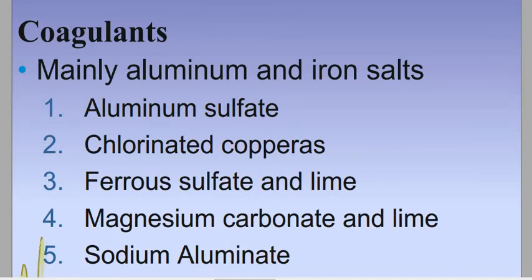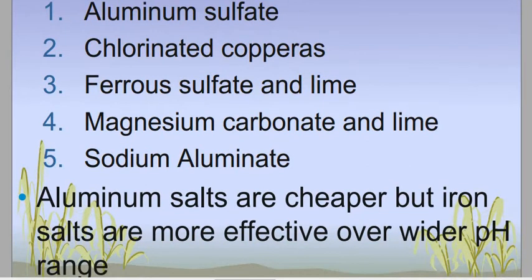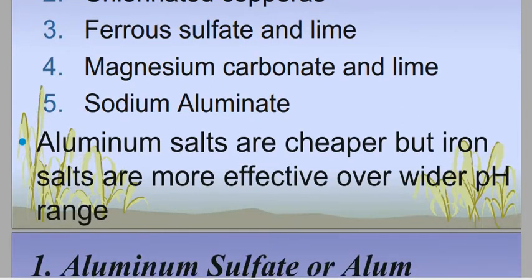Some of the coagulants listed are: aluminium sulphate, chlorinated copperas, ferrous sulphate, lime, magnesium carbonate and lime, and sodium aluminate. Generally aluminium salts are cheaper but iron salts are more effective over a wider range of treatment conditions. Generally aluminium sulphate, frequently called alum, is widely used for the coagulation process.